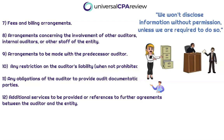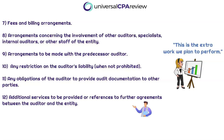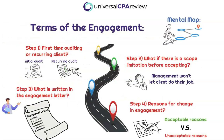If a subpoena comes up, the auditor will have to disclose client information even without their permission — the engagement letter lets the client know that heads up. Any additional services or references to further agreements between the auditor and the client also need to be disclosed. At the end of the day, this is the list of what is actually written in the engagement letter. It all makes sense — this is the contract for actually conducting the audit itself.